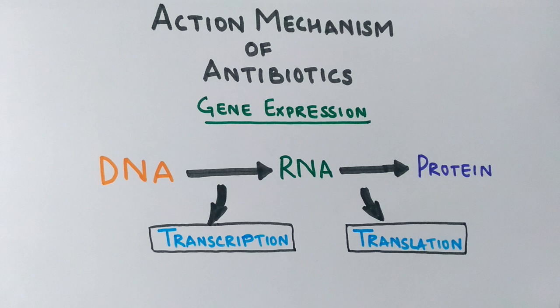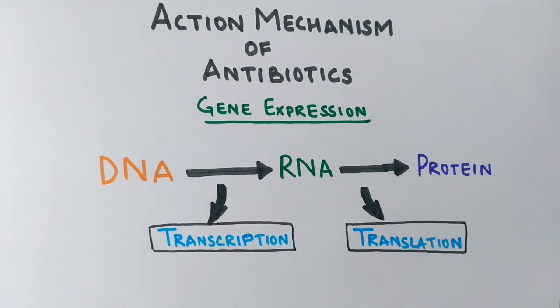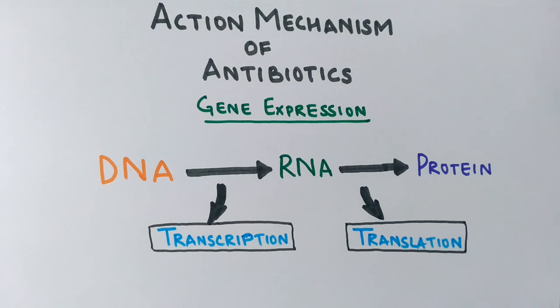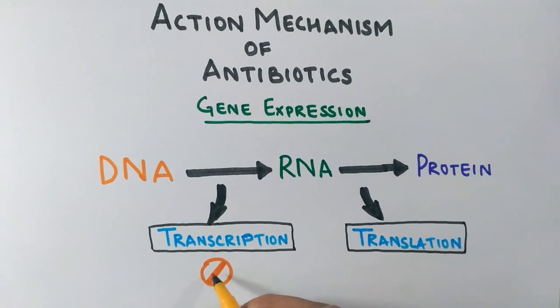So if any of the above processes is halted, the gene will not be expressed and the bacteria will not be able to produce proteins, and ultimately the bacteria population will die off. Antibiotics are made in such a way that they target these processes. In the first process, these antibiotics target the transcription process.